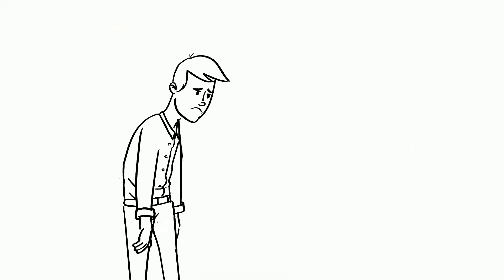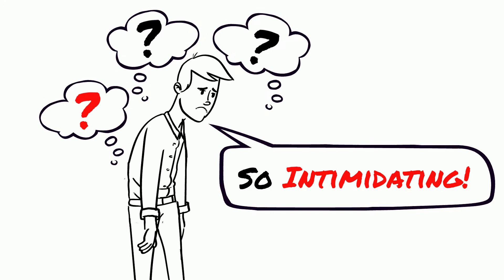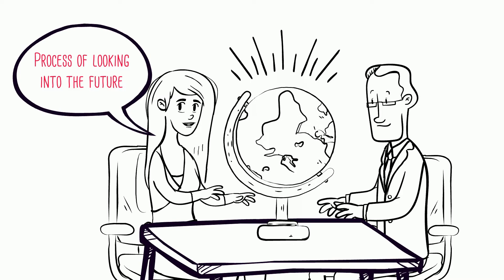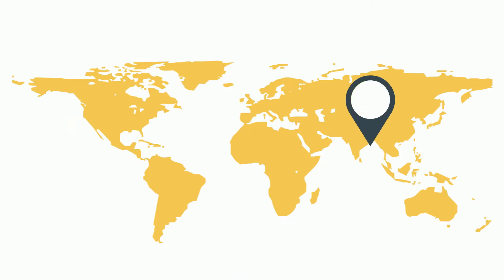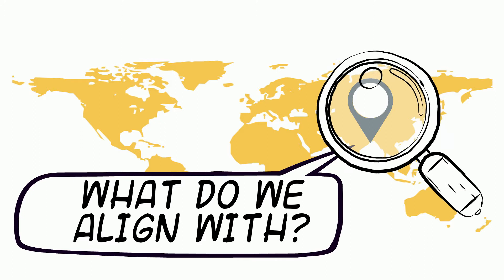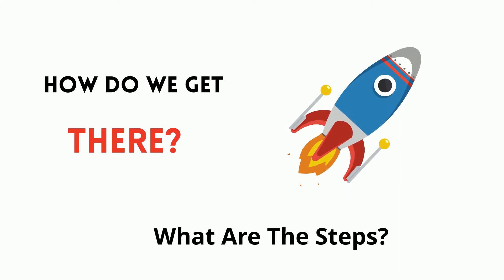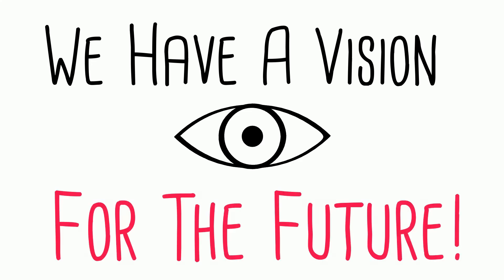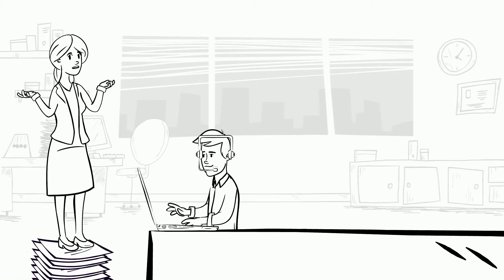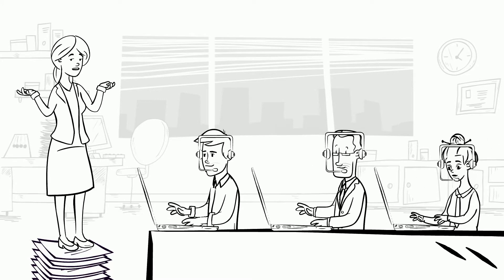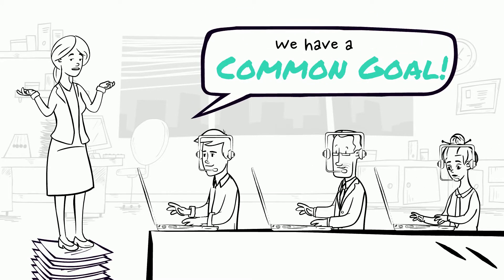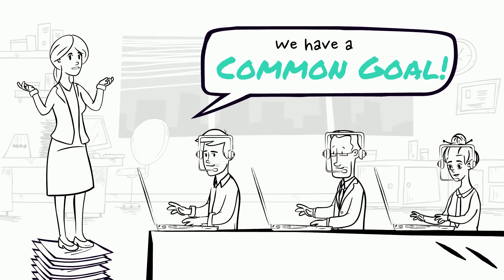Strategic planning is surrounded by hype and obscure concepts that can be quite intimidating. But really, strategic planning is the process of looking into the future and identifying how the organization wishes to align. It is simply the action of determining where an organization or department is going over the next few years and how it's going to get there. The strategic plan ensures the organization has a vision for the future and communicates that plan throughout the organization to ensure all departments and employees are working toward the same goal or cause.